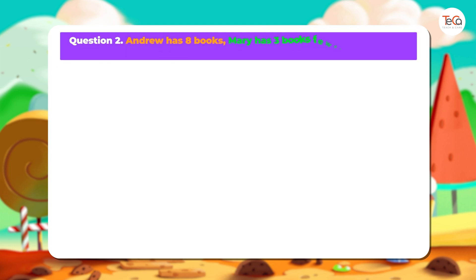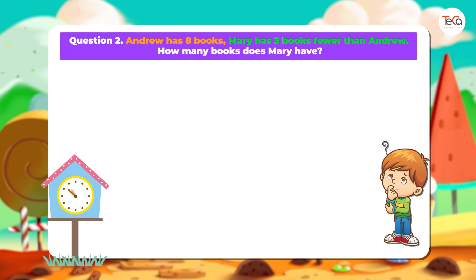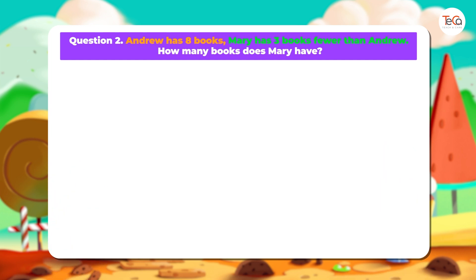Question 2: Andrew has 8 books. Mary has 3 books fewer than Andrew. How many books does Mary have? Now try to find the answer by yourself. Can you do it? Let's see if you have the correct answer.